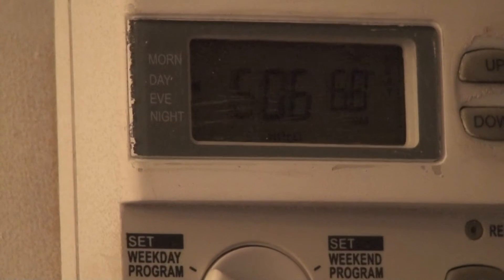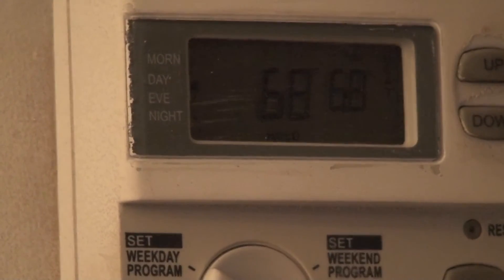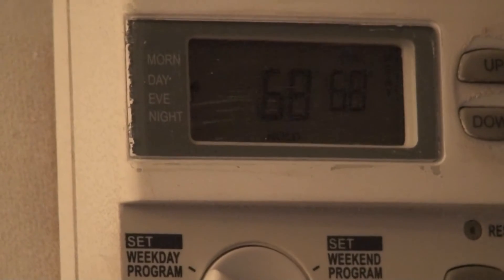The temperature on the far right, the smaller number, that's the temperature it's set at. The bigger one is the temperature it currently is. Well, one morning I got up and the temperature was reading 56 degrees, and it was set at 68.